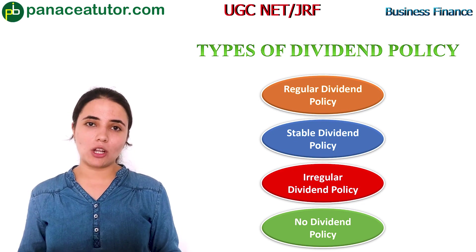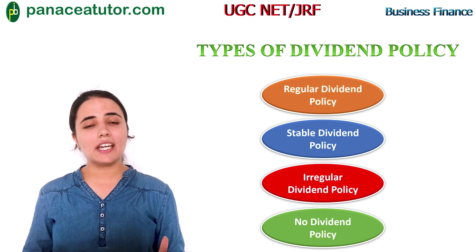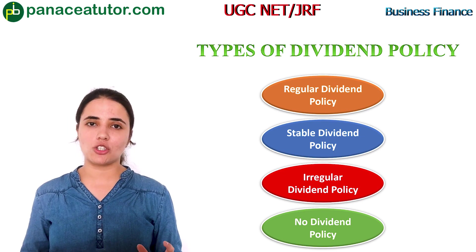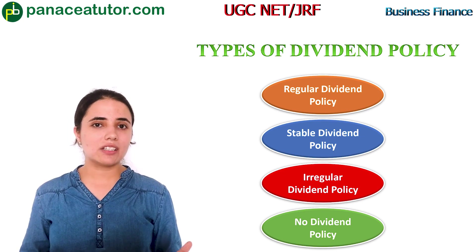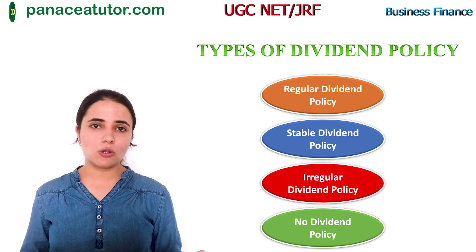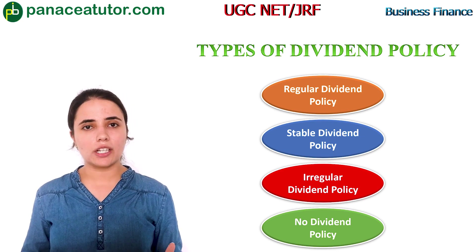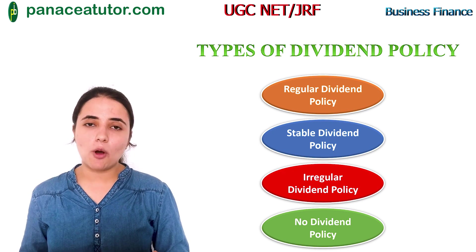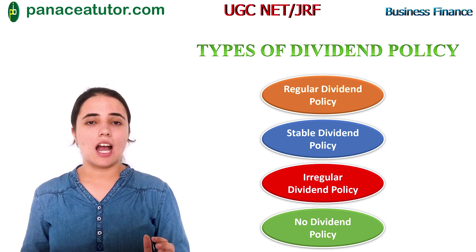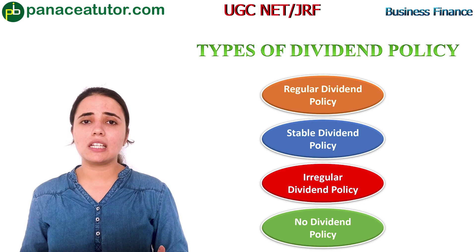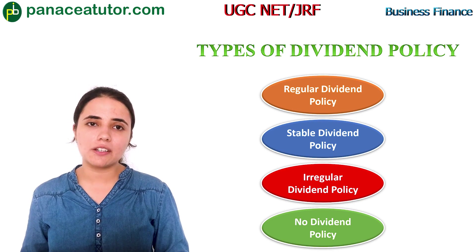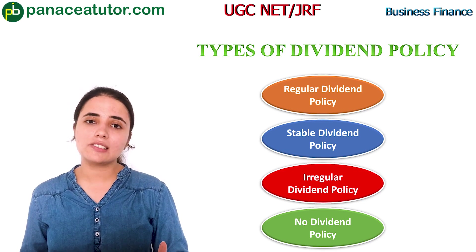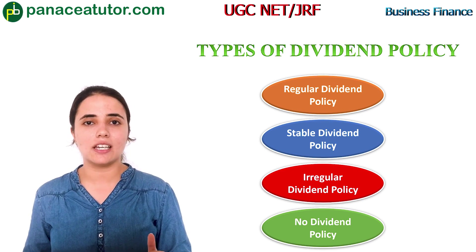The next dividend policy is irregular dividend policy. Under irregular dividend policy, the company is irregular in its declaration of dividend — it will declare dividend only when it has profit, and when it is not earning any profit, it will not declare any dividend. The last dividend policy is no dividend policy, under which the company has no compulsion to declare dividend. This policy is followed by companies which do not have regular earnings and have uncertainty in their earnings.